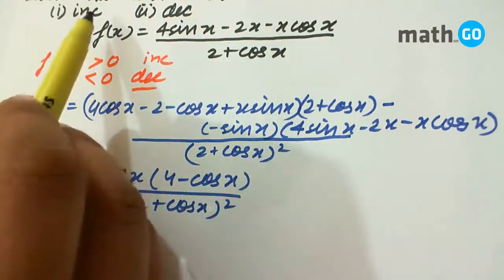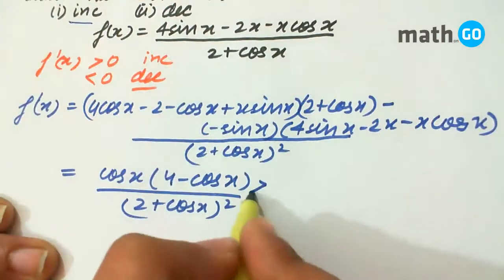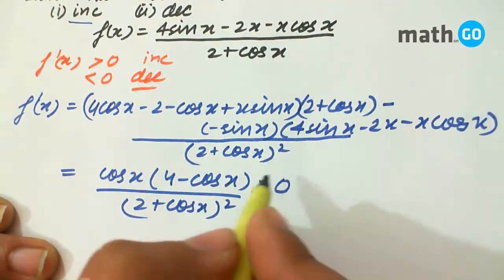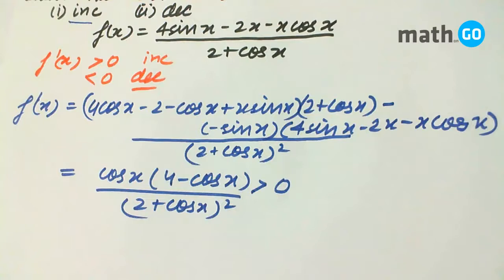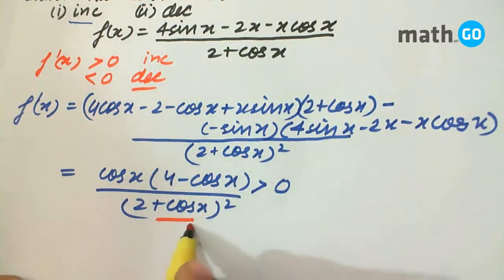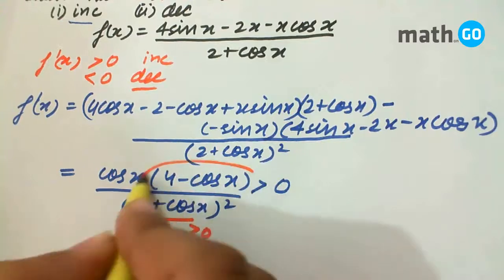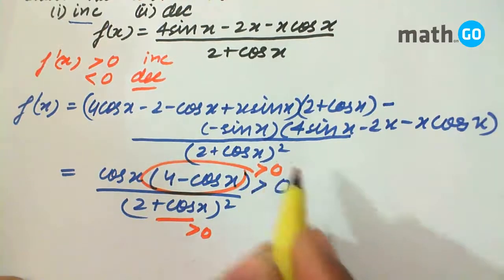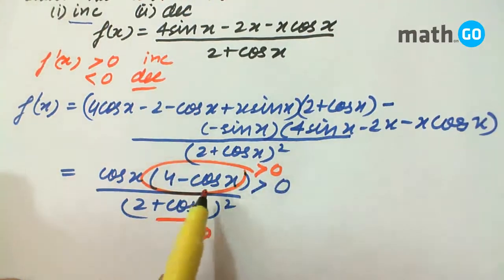Now for increasing, we put it greater than 0. Now the main point here: we can see that this quantity is always greater than 0 and this quantity is also always greater than 0 because the maximum value of cos x is 1. That is, cos x lies between 1 to minus 1.